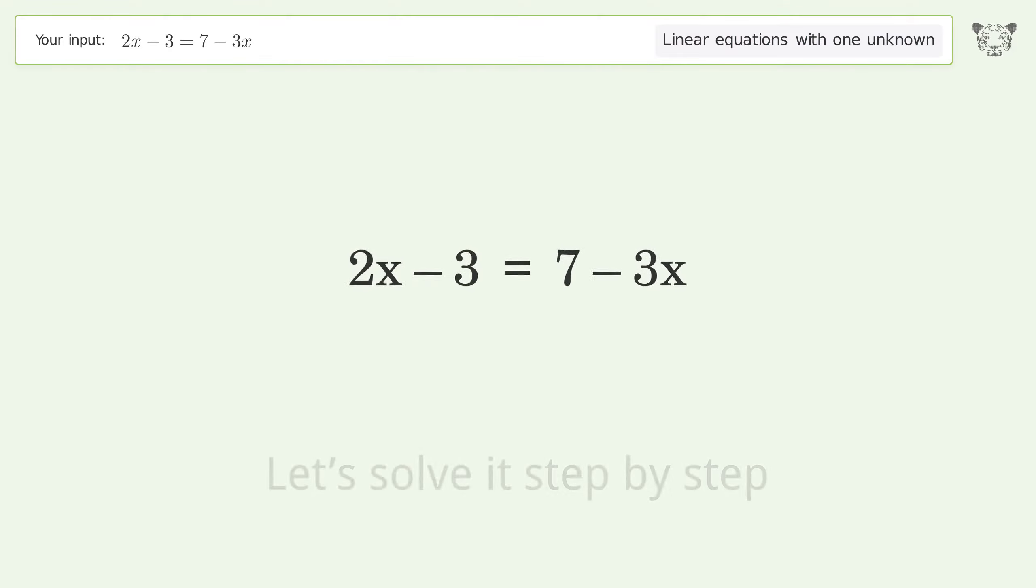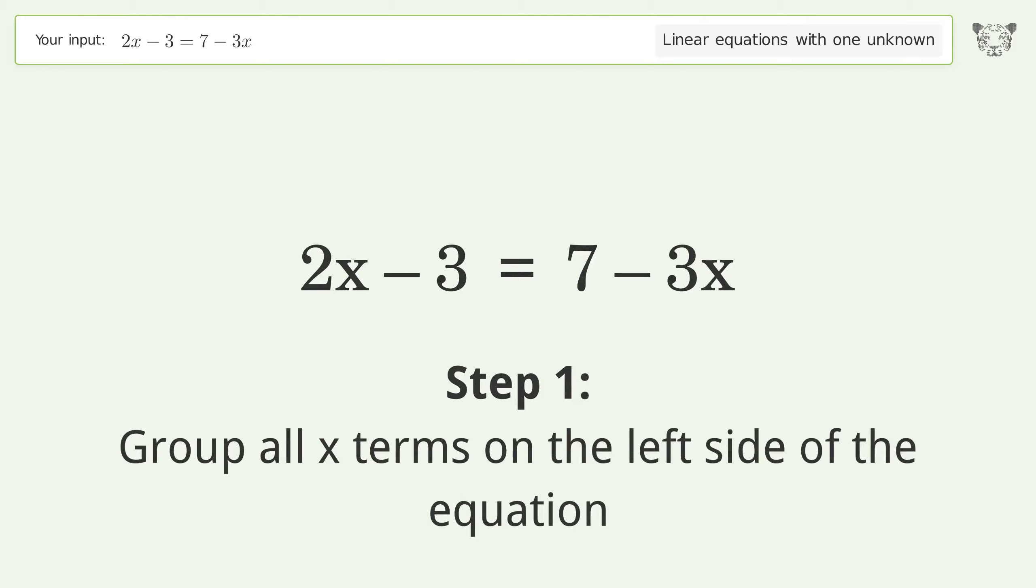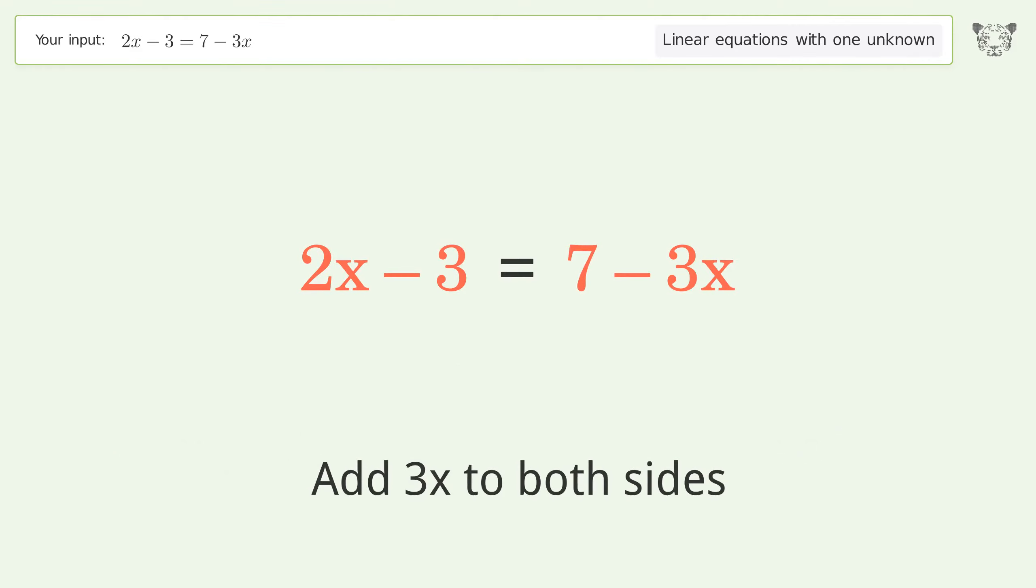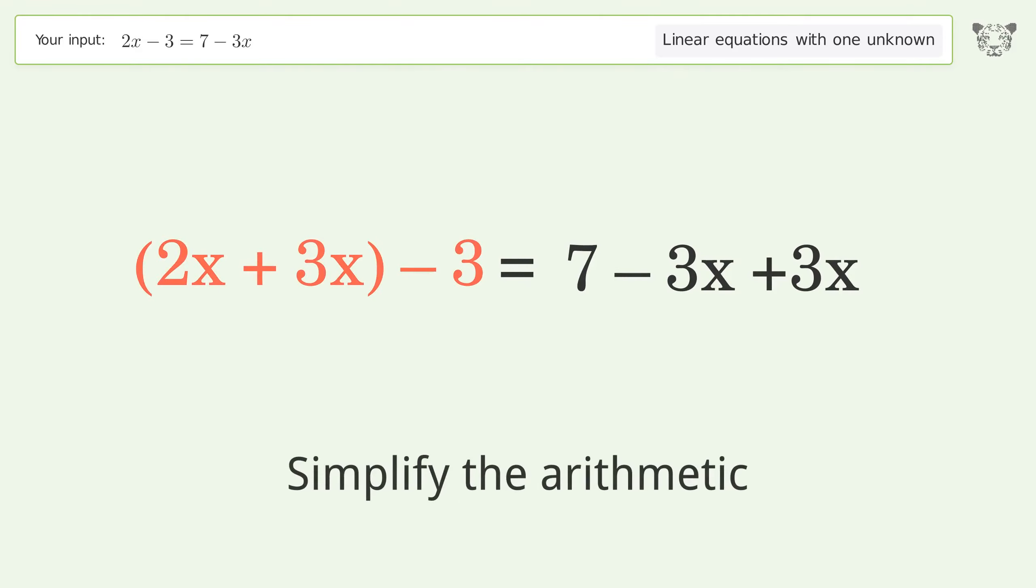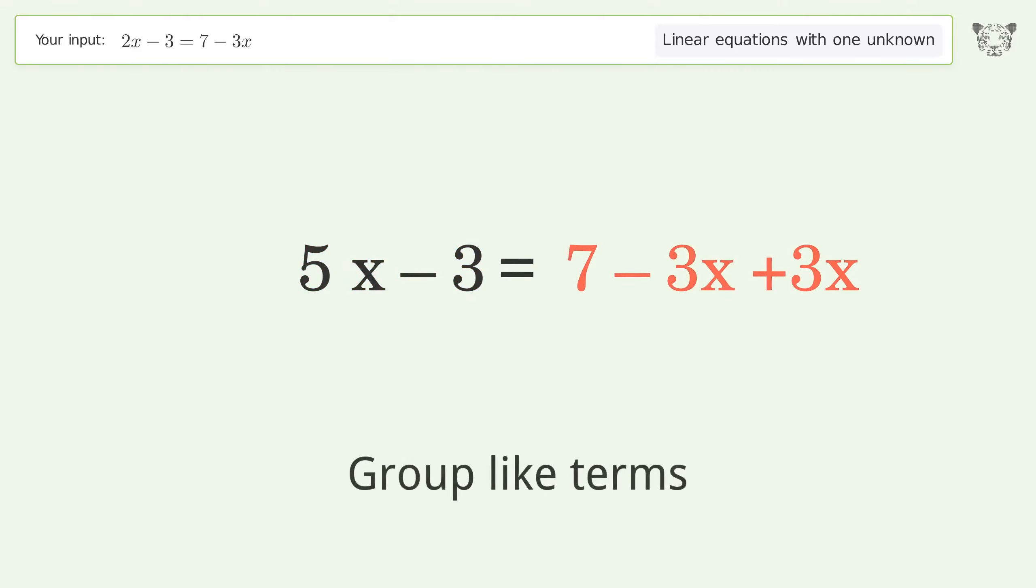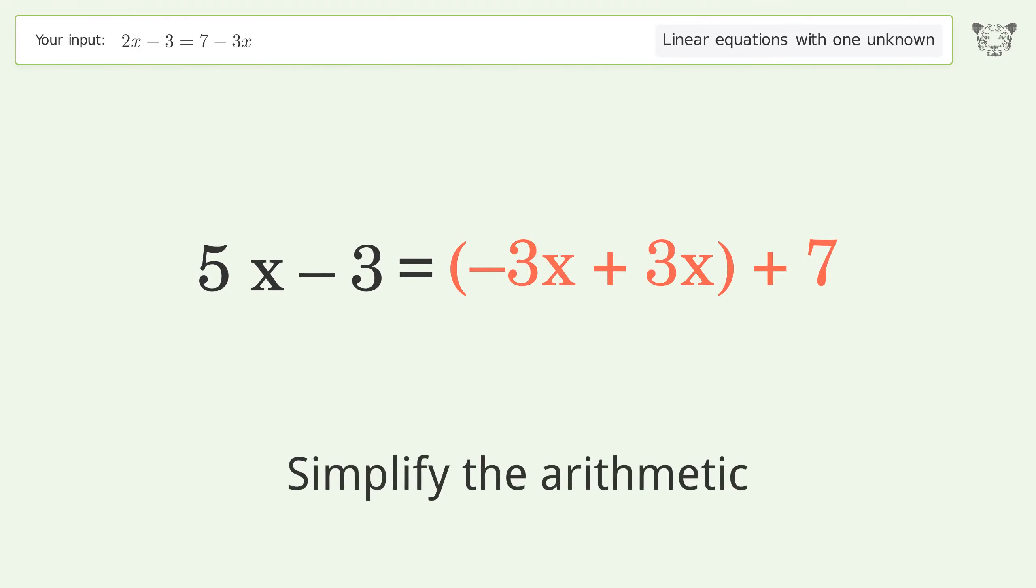Let's solve it step by step. Group all x terms on the left side of the equation. Add 3x to both sides, group like terms, simplify the arithmetic, group like terms, simplify the arithmetic.